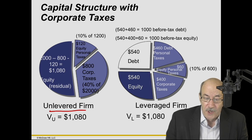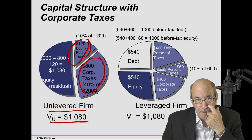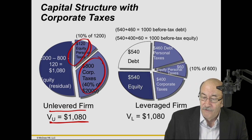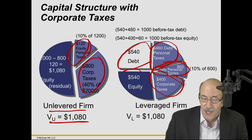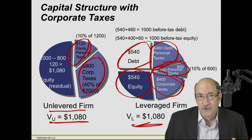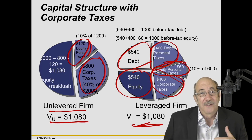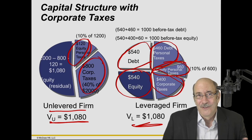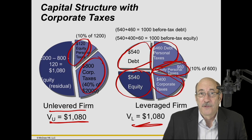Back to the pie chart: in the unlevered firm we had corporate taxes and personal taxes on equity, giving firm value of $1,080. When we add debt, we have personal taxes on debt, personal taxes on equity, corporate taxes — and yet we still get $1,080 for the firm value. That particular combination of personal taxes on equity and debt and corporate taxes — where personal taxes advantage equity and corporate taxes advantage debt — completely erases the corporate tax effect we saw before, where value was maximized with 100% debt. We're back to that same situation as in the perfect capital markets world, where firm value is independent of leverage.